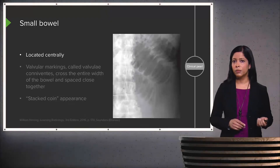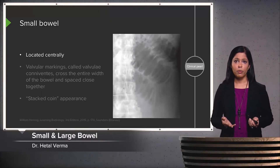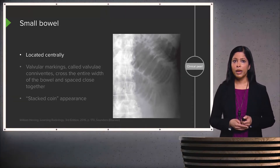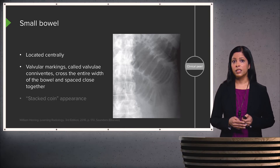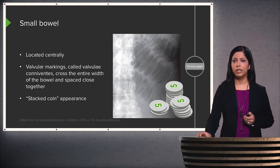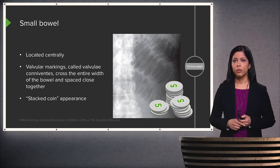How can you differentiate between small and large bowel on a radiograph? When there's a bowel abnormality, it's important to determine which bowel is involved. The small bowel is located centrally and has valvular markings called valvulae conniventes. They cross the entire width of the small bowel and are spaced very close together, giving a classic stacked coin appearance — the small bowel actually looks very similar to that.